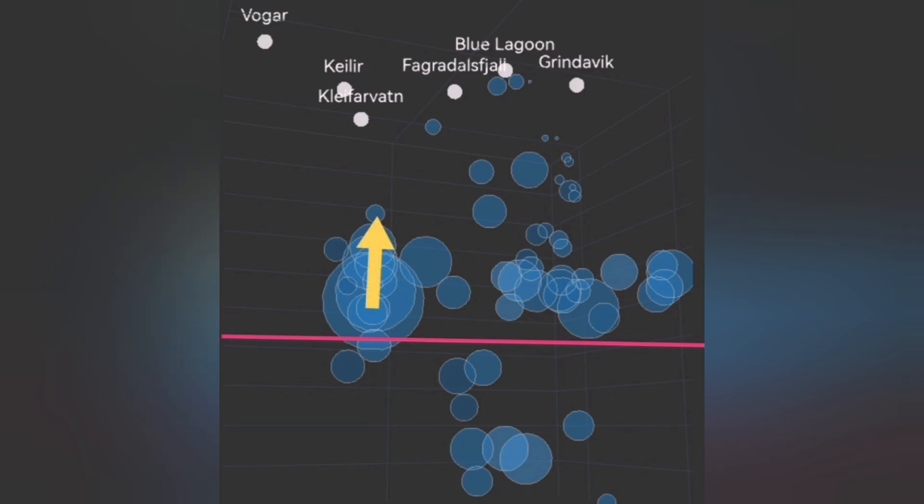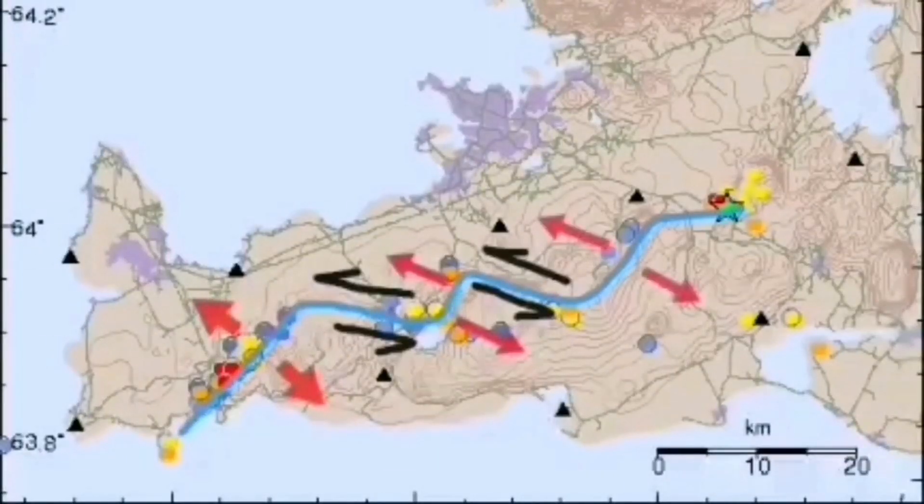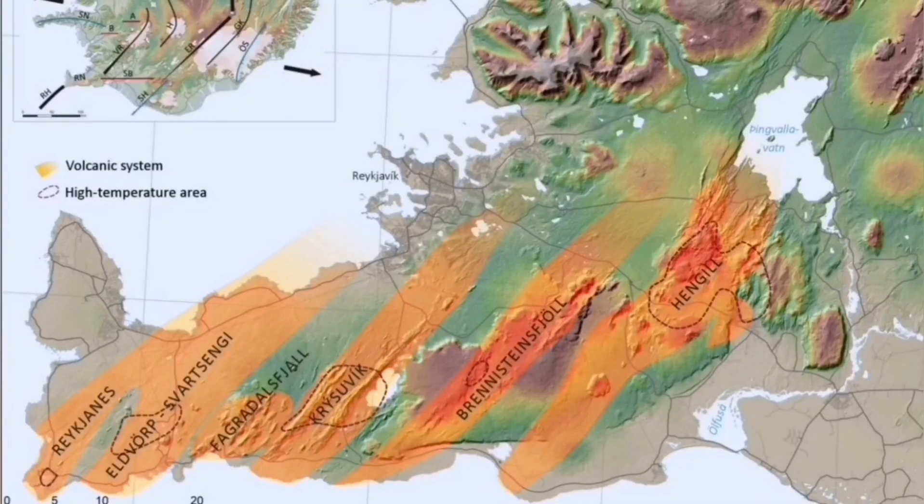And this is the situation that we are now seeing. We have to wait and see. Up to now, it was transferring through the transform faults toward the east. Now it seems the Krýsuvík is actually awakening.